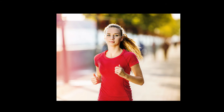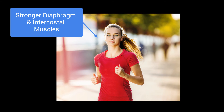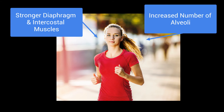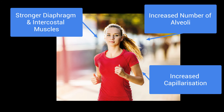In terms of the respiratory system, the netballer will now have a stronger diaphragm and intercostal muscles. This means that more air will be forced into the lungs and therefore more oxygen is available. There will also be an increase in the number of alveoli, as well as an increase in the number of capillaries surrounding the alveoli — this is known as increased capillarization. These changes mean that the oxygen entering the lungs will diffuse into the bloodstream at a faster rate.